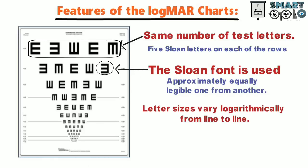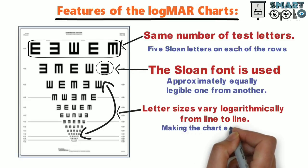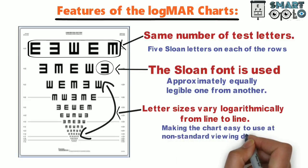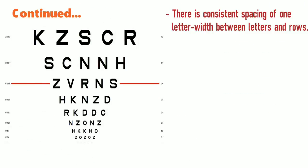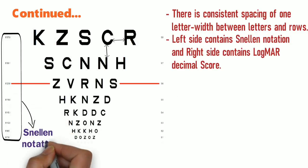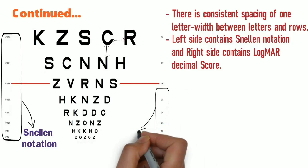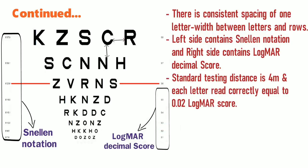The letter sizes vary logarithmically from line to line, making the chart easy to use at non-standard viewing distances. There is consistent spacing of one letter width between the letters and the rows. The left side of the chart contains Snellen notation and the right side contains the LogMAR decimal score.